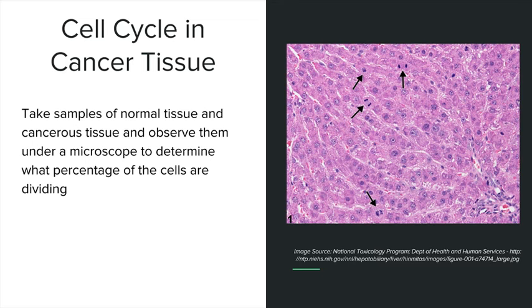In this lab report example, we're looking at cell cycle in cancer tissue. So in this experiment, we'll take two different types of tissue, normal tissue and cancerous tissue, look at them under a microscope, and try to determine what percentage of the cells are dividing.